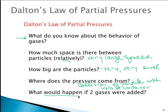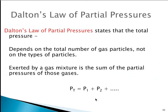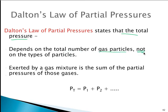And now we're going to answer the question: what would happen if two gases were added together? How would that affect the pressure of the system if we assume that the volume and the temperature remain constant? If we look at strictly the definition of partial pressure, it states that the total pressure of a gas system depends on the total number of gas particles, not the type of particles. So it doesn't matter what gases I'm mixing. Once I add them, what can I say about the total number of particles?